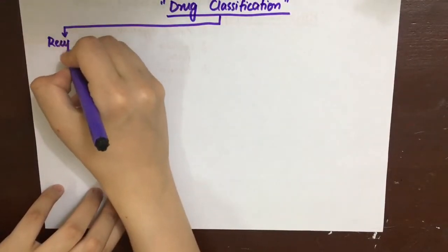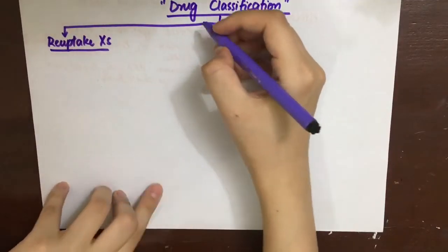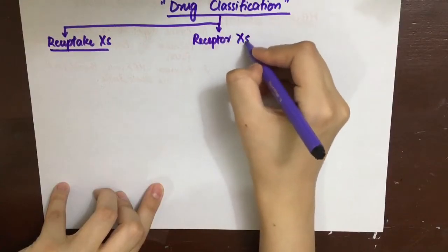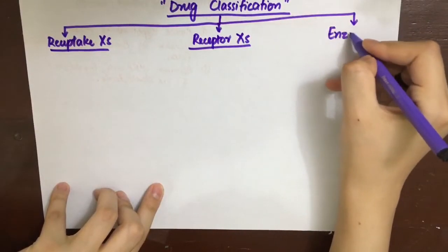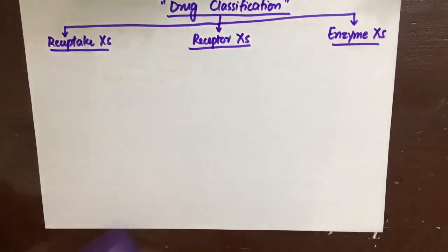We can actually increase the levels of these monoamines in the synapses by three ways. First, we can inhibit their reuptake by reuptake mechanisms. Secondly, we can inhibit the autoreceptors that are responsible for carrying out negative feedback and thus inhibiting their release. And thirdly, we can inhibit the enzymes that are responsible for their metabolism.